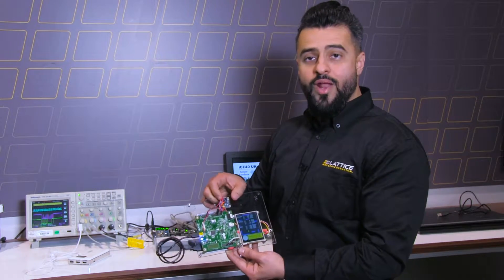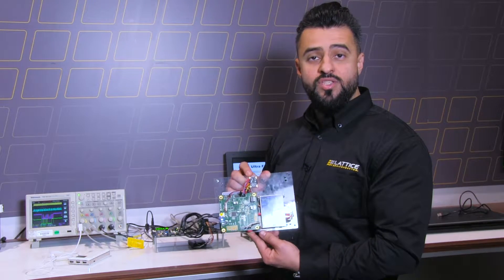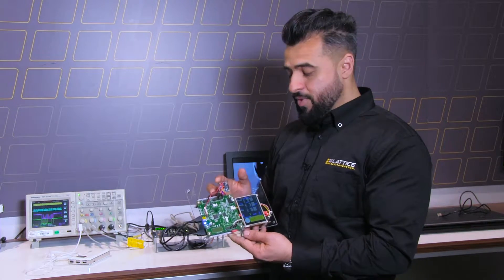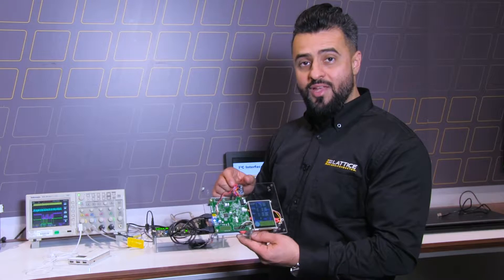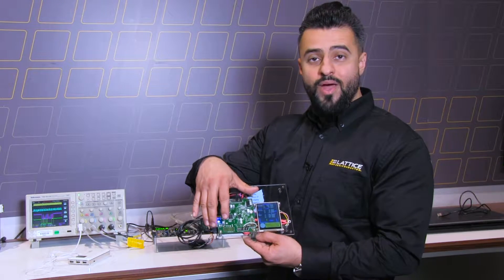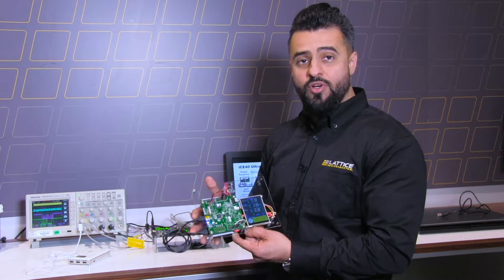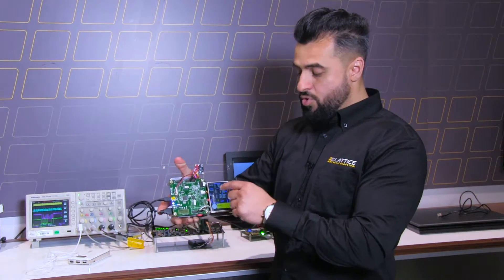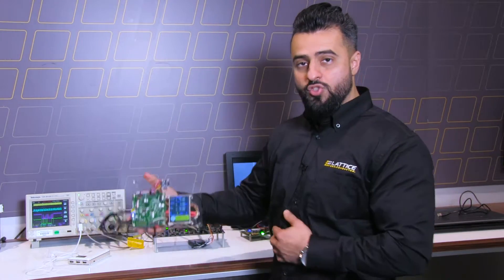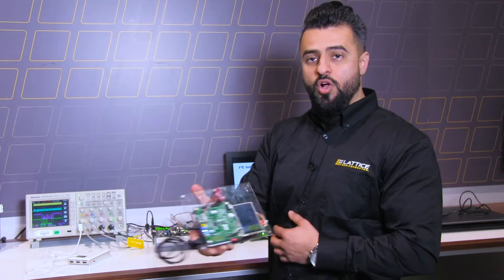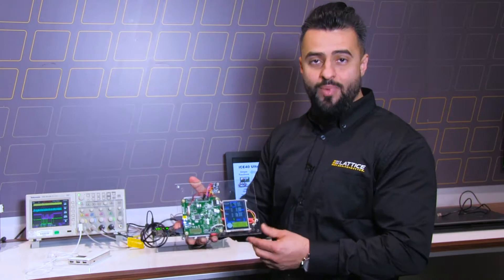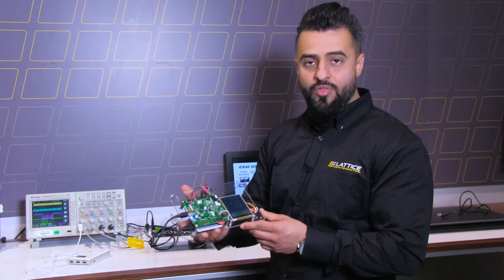We have a small board that has a temperature sensor, gyro, accelerometer, and compass. All of this information is sent through to our ICE40 Ultra Plus device, and all that information is captured and fused together. Now you can display it on this display, and as you move this board, you can see all of the changes that are happening based on the accelerometer and the magnetometer in the compass.